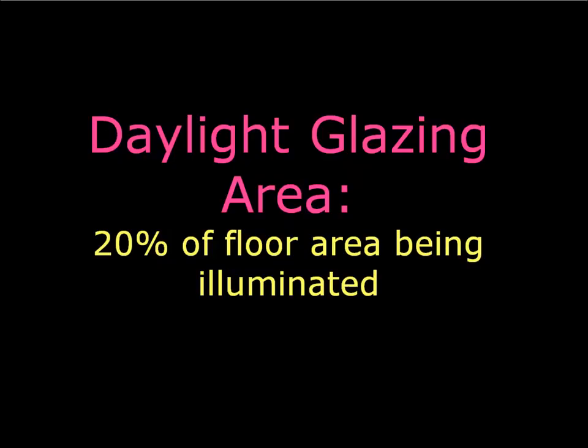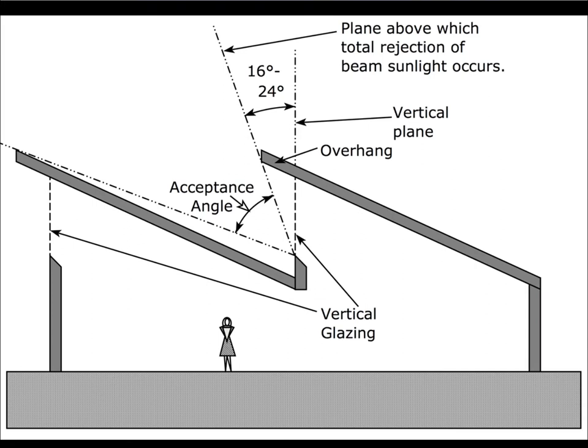We've learned that if we put in vertical glass facing either north or south with a proper overhang, we can provide adequate daylight with a glazing area that's approximately 20% of the floor area being illuminated. We've also learned that those overhangs are not only crucial but we have methods of sizing them. For example, a south-facing sawtooth has an overhang that protects to a profile angle of somewhere between 16 and 24 degrees off of vertical.